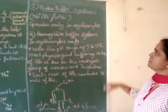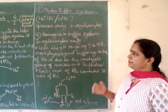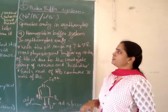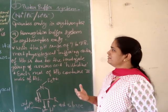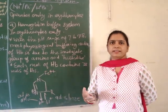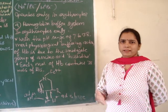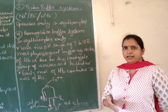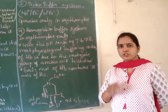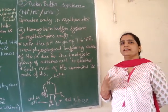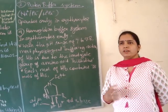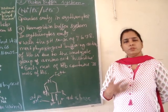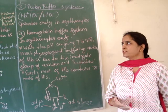The third type of buffer system that maintains the pH of blood is the protein buffer system, which operates in erythrocytes when the medium is acidic. In acidic solution, proteins present in erythrocytes or plasma act as a base and neutralize the acid. When the solution is alkaline, proteins act as an acid. Both amino groups and carboxylic groups are present on proteins because they are made up of amino acids.